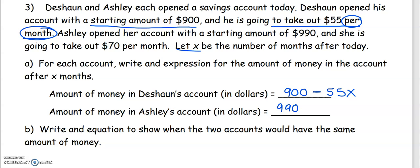And she is going to take out, subtract, $70 per month. Part b says write an equation to show when the two accounts would have the same amount of money.